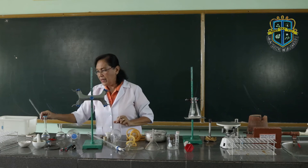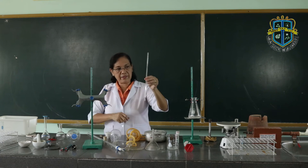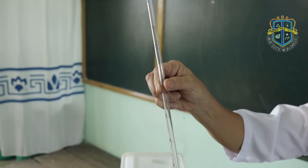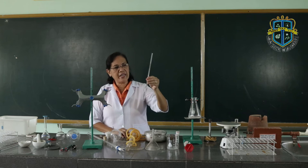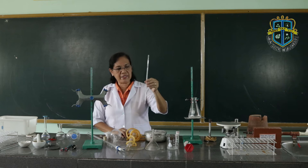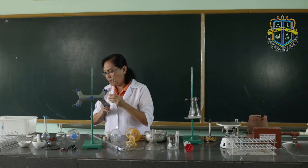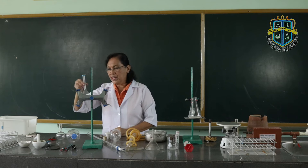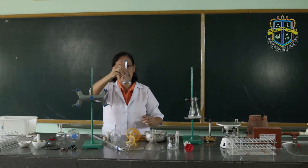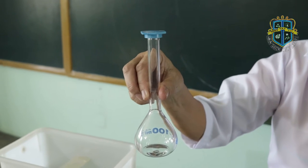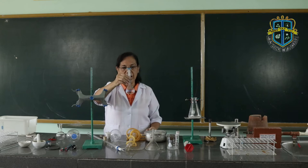This is the pipette. The pipette is used to measure an accurate and exact amount of liquids. Then we have the volumetric flask. The volumetric flask is also used to measure an exact amount of liquids.